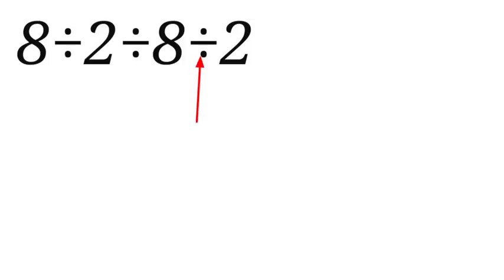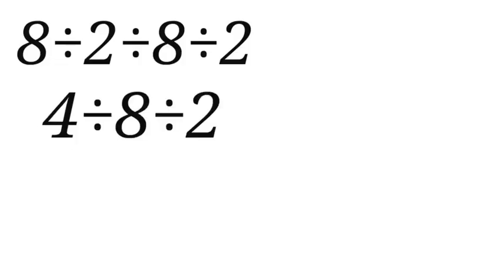Now let us go ahead and solve: 8 divided by 2 we have 4. Now our new expression is 4 divided by 8 divided by 2. 4 divided by 8 can be rewritten as 4 all over 8 divided by the 2 that was there.